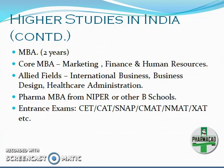If students have more inclination towards management and less towards the technical aspect of pharmacy, there are options of MBA, which is a 2-year course. There is core MBA covering marketing, finance and human resources — the only drawback being that the student may not end up working for a pharmaceutical company. There are allied fields like international business, business design, and healthcare administration. There is also core Pharma MBA from NIPER and other B-schools. With Pharma MBA, the student will end up working for a pharmaceutical company. The entrance exams for the same are CAT, SNAP, CMAT, NMAT, XAT and many others, and several institutes have their own entrance exams.